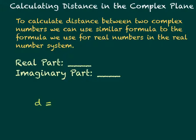First, we have to denote what is the real part and what is the imaginary part. We're going to call the real part X and the imaginary part Y. The reason we do it this way is because it's similar to how we graphed them before — the real part on the X axis, the horizontal axis, and the imaginary part on the Y axis, the vertical axis.